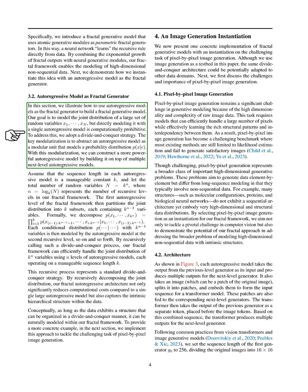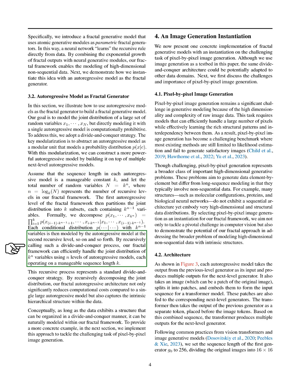Next, we illustrate how to use autoregressive models as fractal generators. Our aim is to model the joint distribution of many random variables, but using a single autoregressive model for this is computationally challenging. To overcome this, we use a divide-and-conquer approach, treating an autoregressive model as a modular unit that models a probability distribution. This allows us to create a more powerful model by stacking multiple autoregressive models. Assuming each model handles a manageable sequence length, we can partition the joint distribution into subsets, each modeled by the autoregressive model at the next level, continuing recursively. This strategy enables us to efficiently manage the joint distribution of many variables using fewer levels, significantly reducing computational costs while capturing the hierarchical structure of the data.